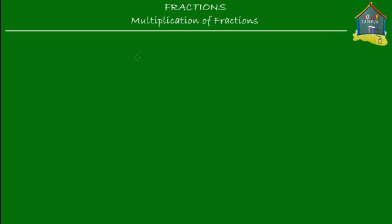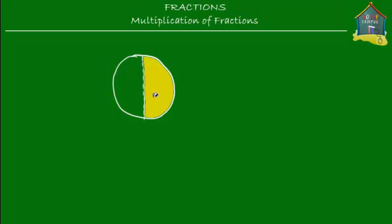So let's start with our pizzas as usual. I have this one pizza, and what I do is I give half of this pizza to you. So I slice up this pizza into two halves and I give one half of this pizza, which I'm shading in yellow, to you.